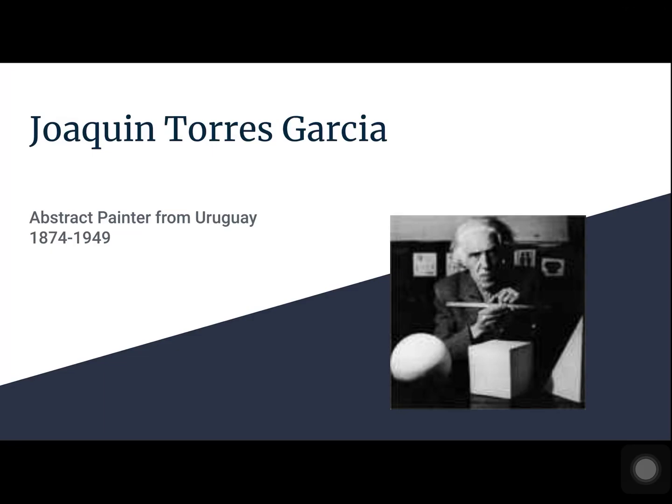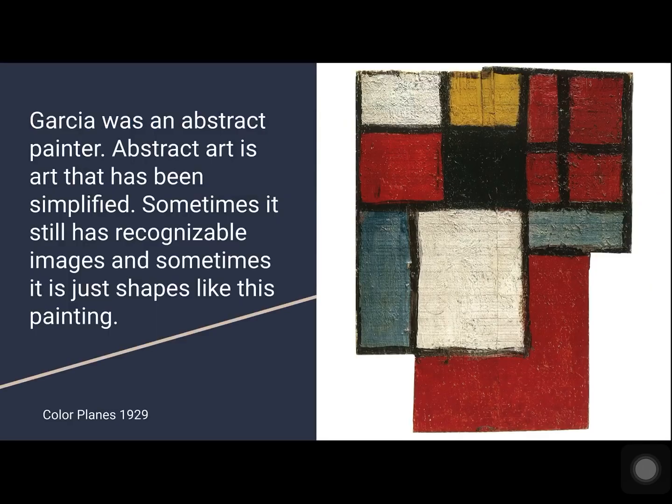Today we're going to learn about Joaquin Torres Garcia. He was an abstract painter from Uruguay and lived from 1874 to 1949. Abstract art is art that has been simplified. Sometimes it still has recognizable images and sometimes it is just shapes, like this painting.